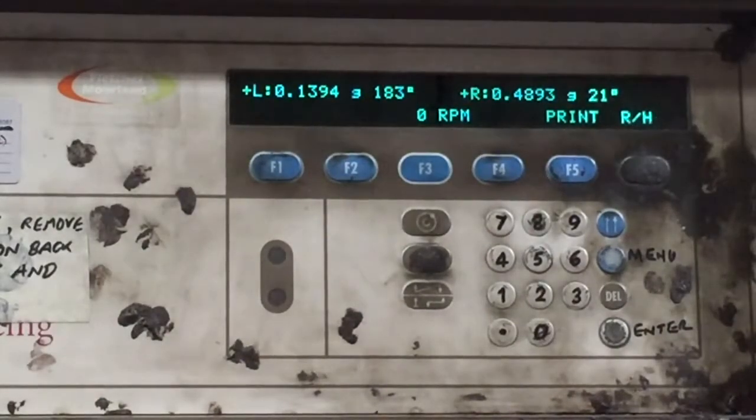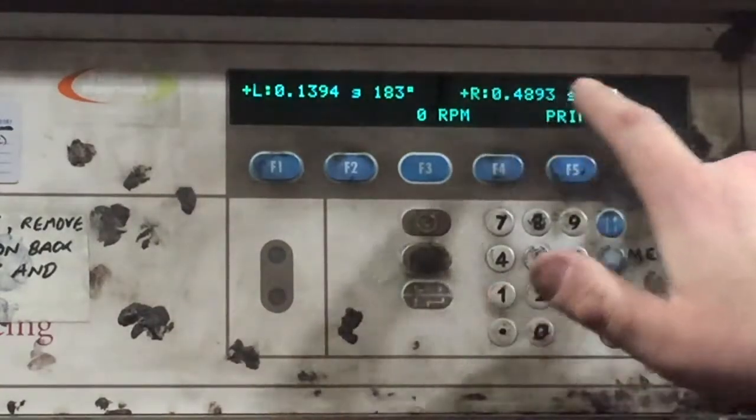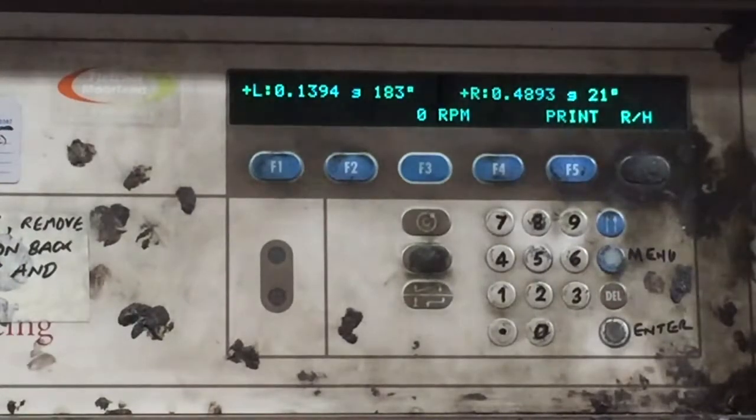After the first test run, what we can see here from the printout from the balancing machine is that we are acquiring almost half a gram at 21 degrees. The engineer will now add that weight and will take out another run so we see which balance grade we have achieved.